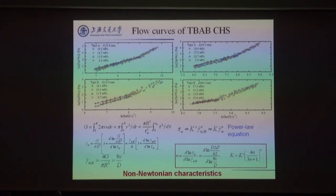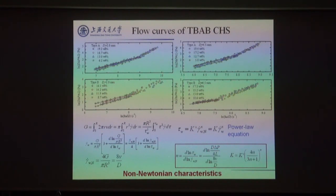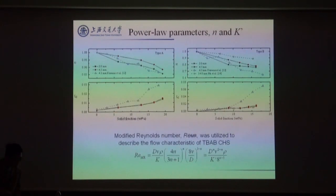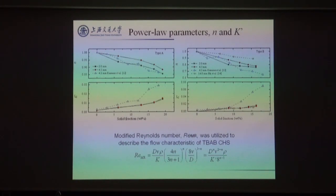Here are pressure drop results for different tubes and for type A and type B. There are clearly two branches: one for laminar flow and one for turbulent flow. Because TBAB-CHS is a non-Newtonian fluid, we applied a power-law fluid model to obtain two important parameters: the flow index n and the flow consistency parameter K'. With these two parameters we can define a modified Reynolds number to estimate friction factors. With increasing concentration, the flow index decreases and K' increases.